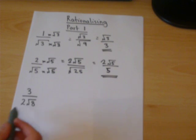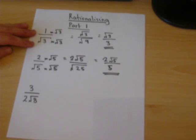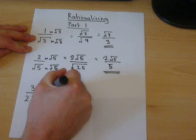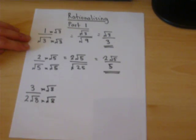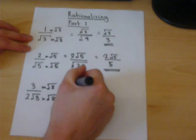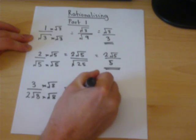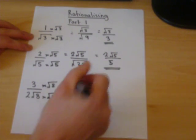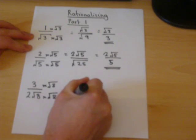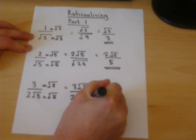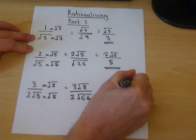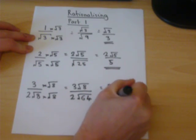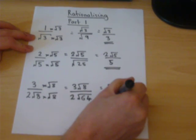Don't be put off by this expression here. The same principles apply. We times top and bottom by just the root 8. 3 times root 8 all over 2 root 8 is root 64. That part can be worked out because we know that the root of 64 is 8.